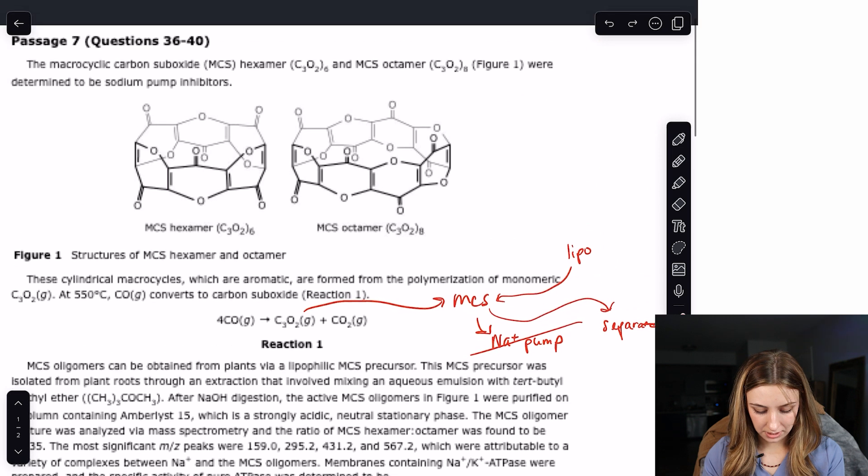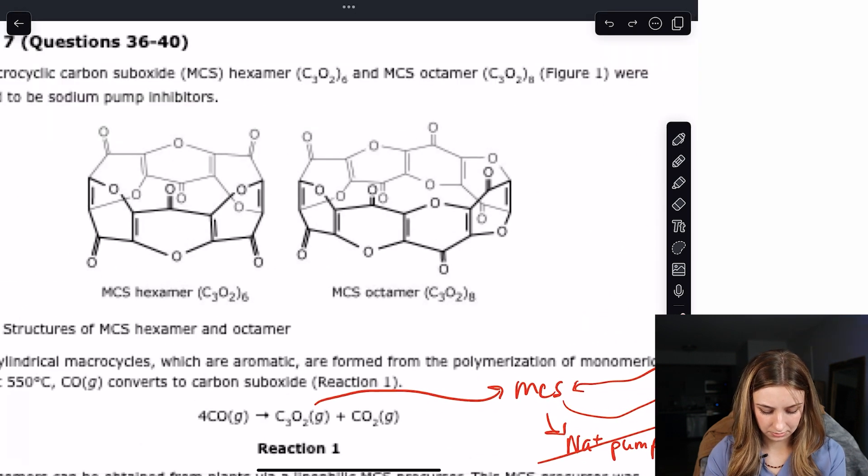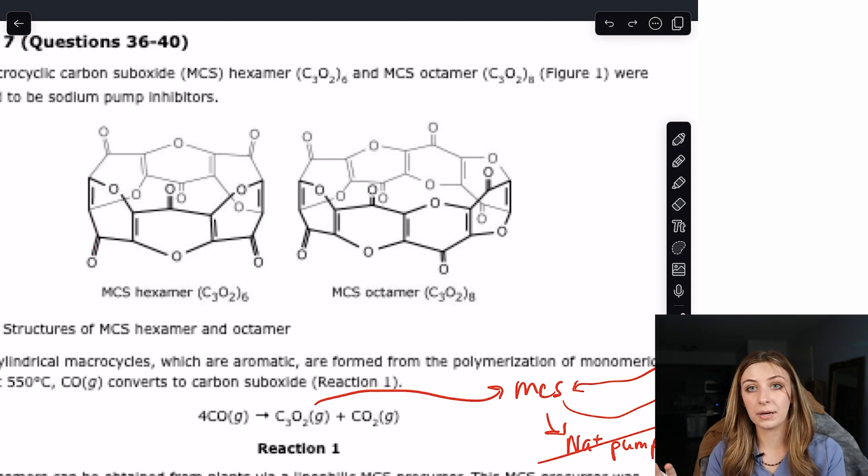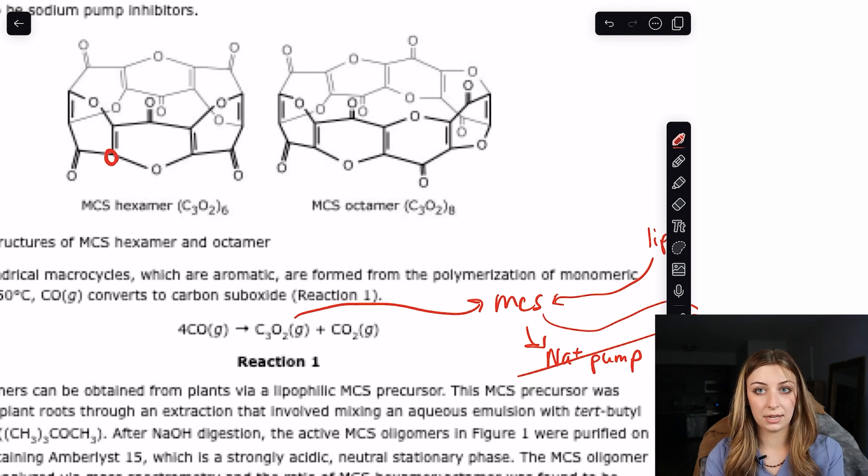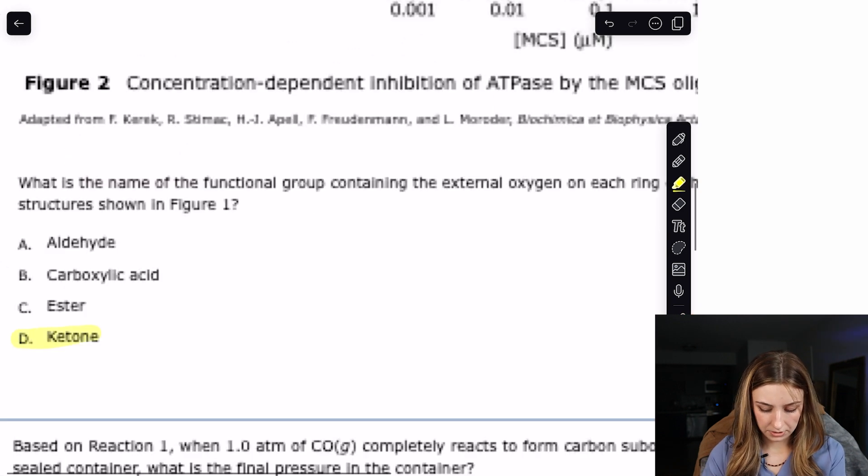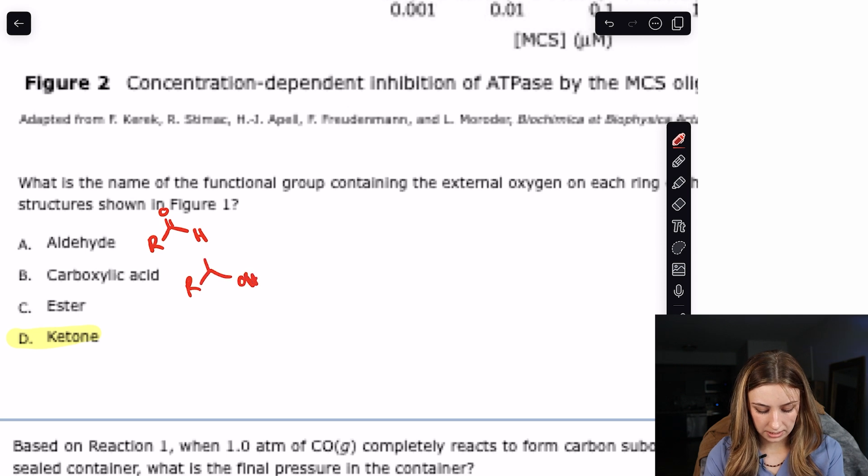Number 36 says, what is the name of the functional group containing the external oxygen on each ring of the MCS structure shown in figure one? So the external oxygen. These guys? Yeah, because these would not be, these would be internal, right? So the only other oxygen they can talk about is this. And it just asks what functional group that is. So that's a ketone. You can barely tell with this quality, but that's a double line. So it's a ketone. An ester is like an ether plus a ketone. Definitely got to know your functional groups.